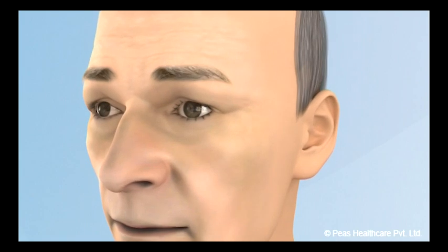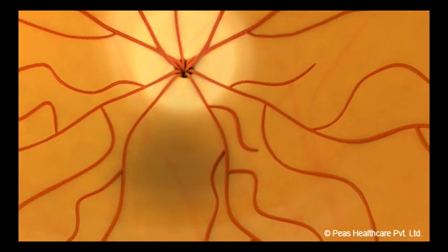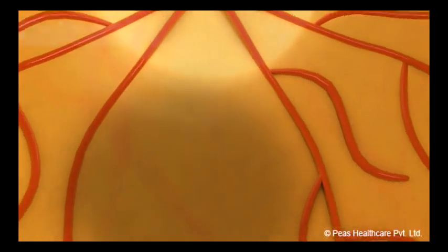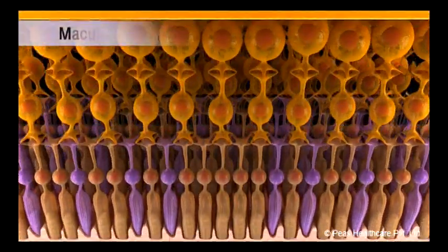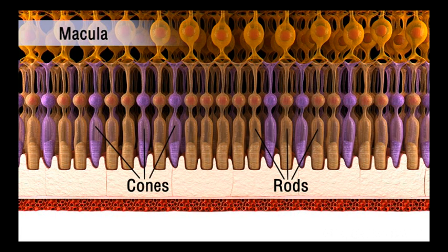Macular degeneration is the result of damage to the nerve cells in the macula. The macula is the part of the retina that is most densely packed with two types of cells, rods and cones. The macula is essential for central vision.